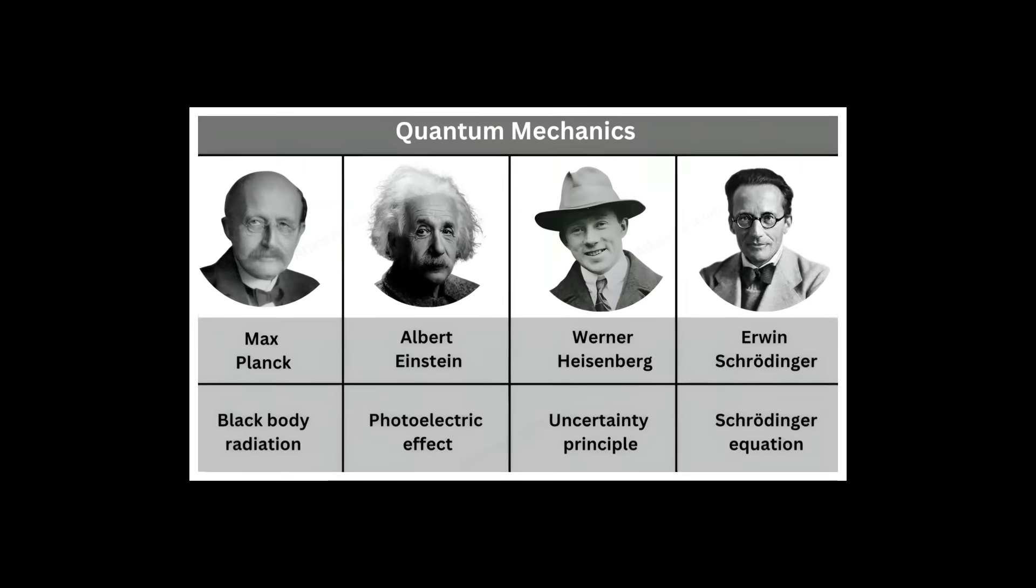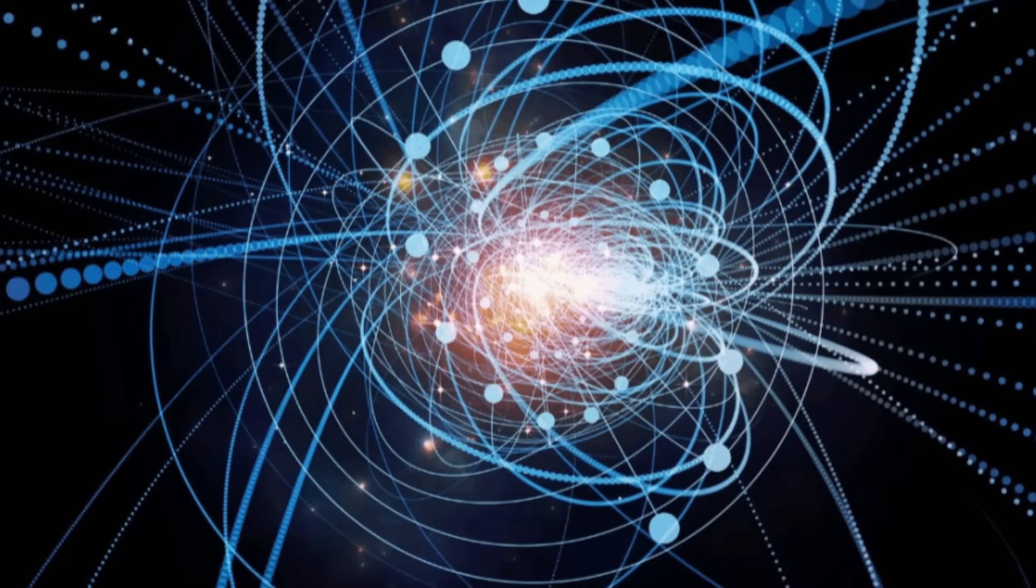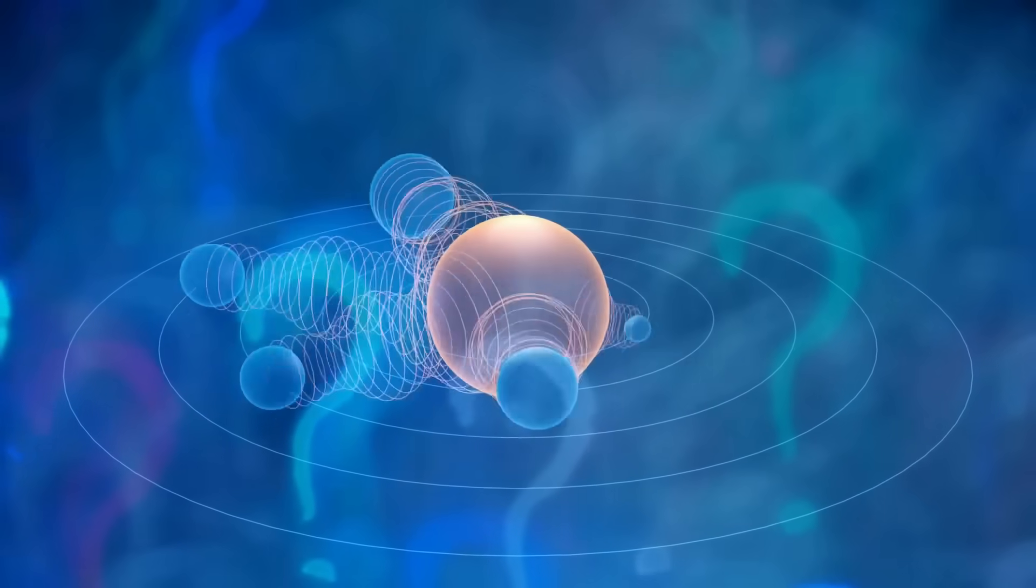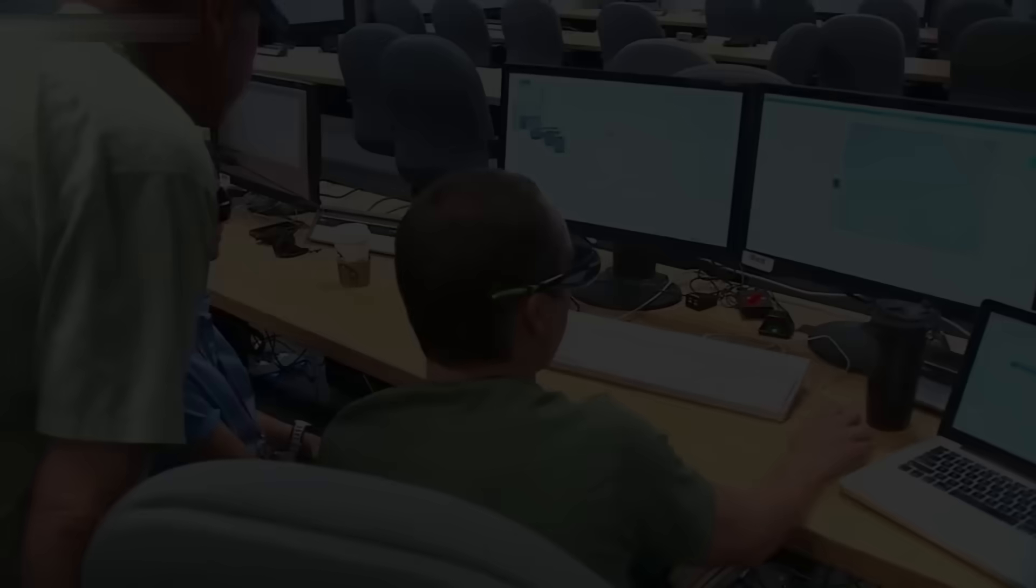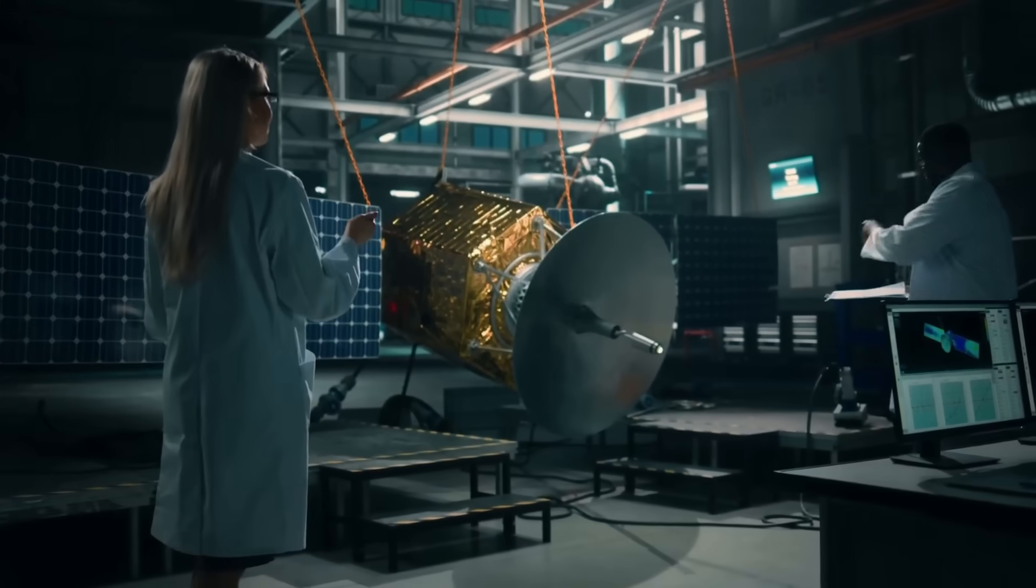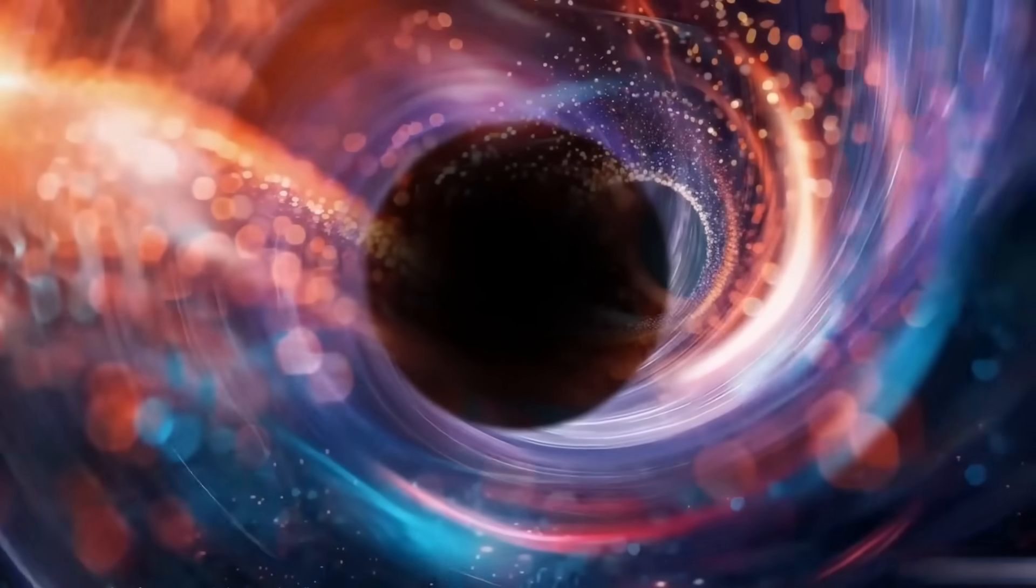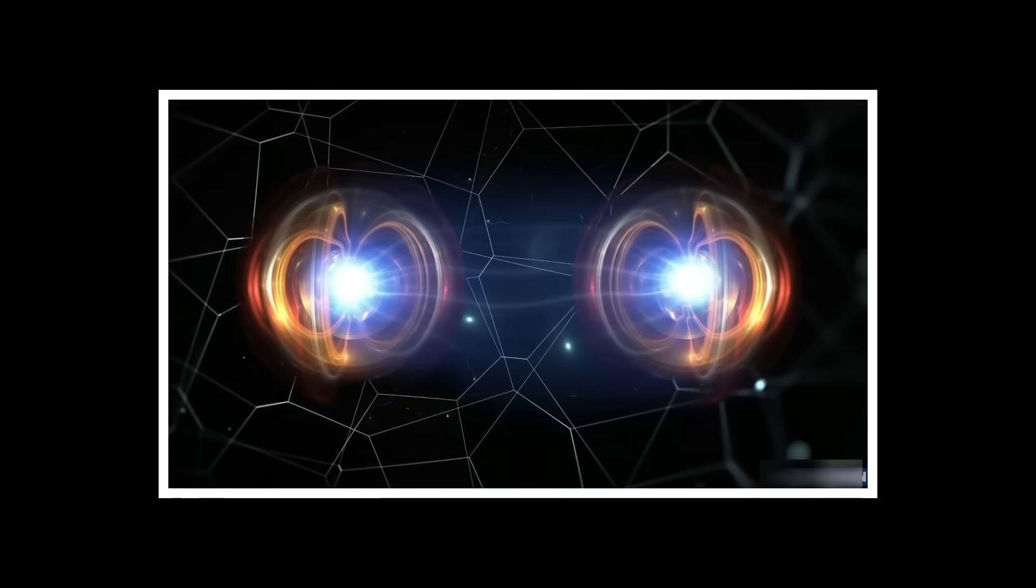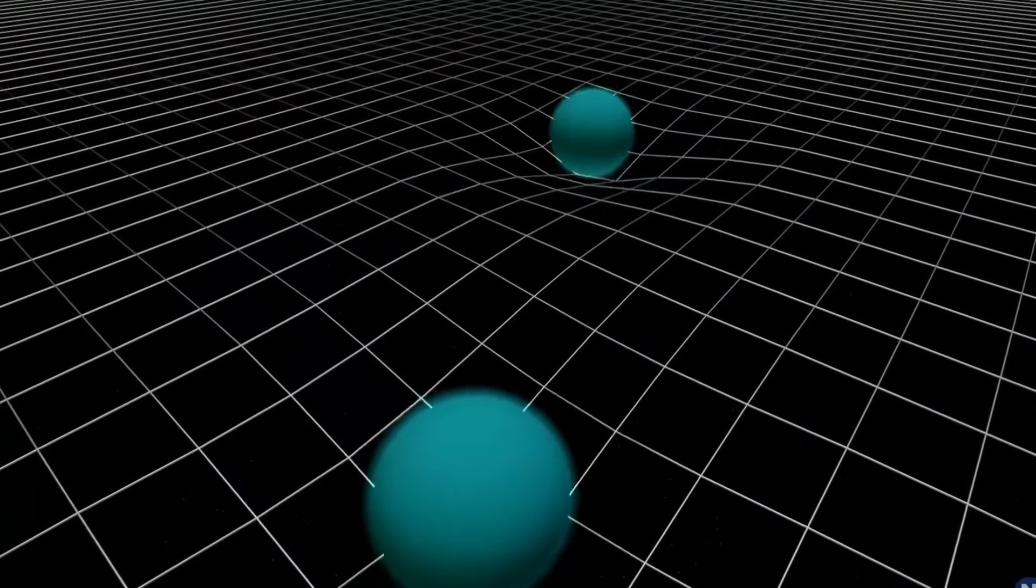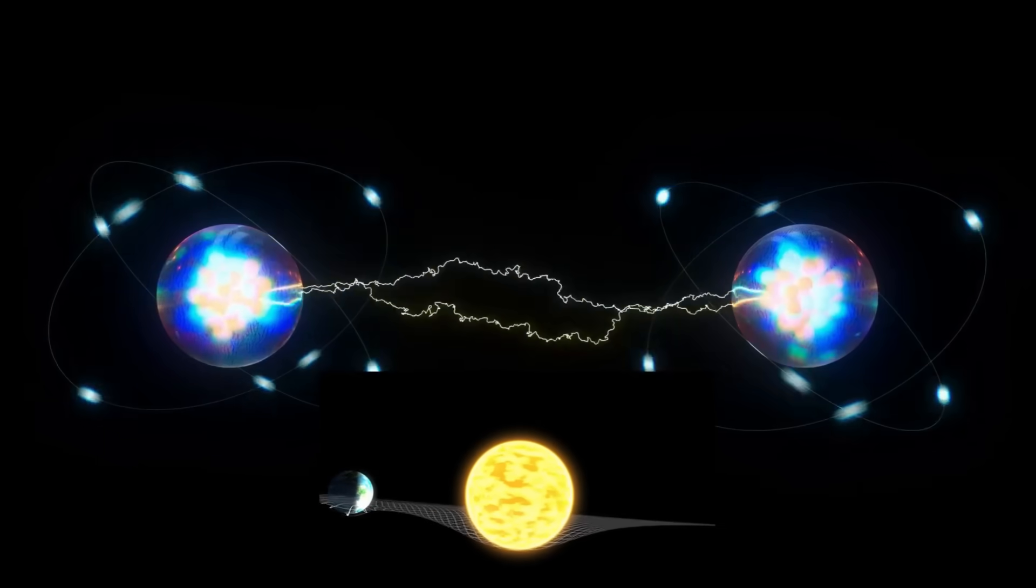Or it could be something far more profound. Actual evidence of quantum gravity, the elusive connection between Einstein's space-time and the quantum world. The most scientifically rigorous position is caution. More measurements, more tests, and more analysis are needed before making extraordinary claims. What makes this potential discovery so compelling is how it bridges theoretical physics with practical technology. The same quantum sensors being refined at MIT and other institutions will soon map our world in unprecedented detail.